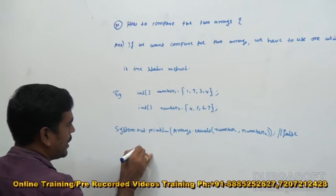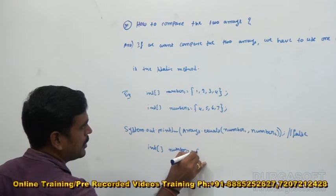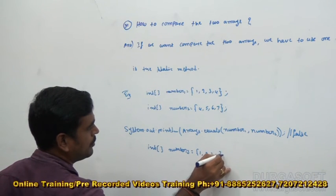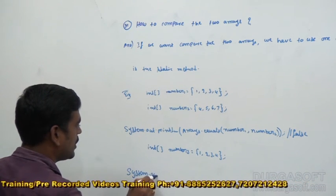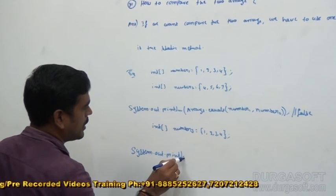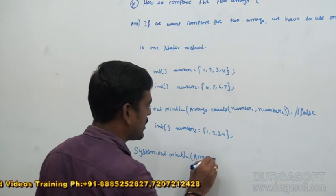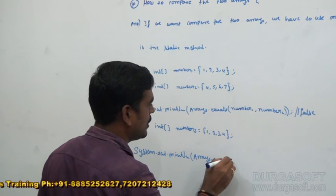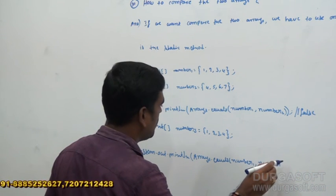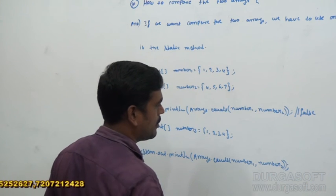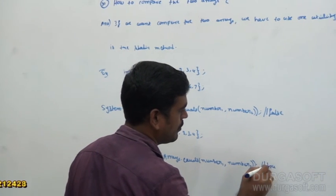Next, I am going to declare one more array: int num3 = {1, 2, 3, 4}. Then System.out.println(Arrays.equals(num1, num3)). When we are compiling and executing this application, we are going to get what? True.